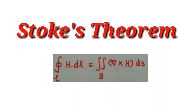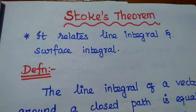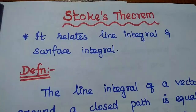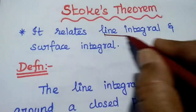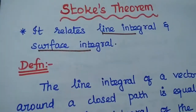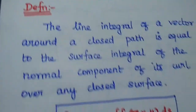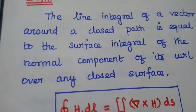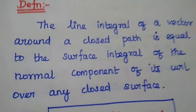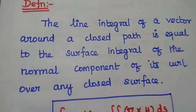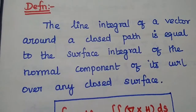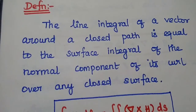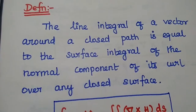Dear students, now we are going to discuss Stokes theorem and its proof and applications. Stokes theorem relates line integral and surface integral. The definition of Stokes theorem is: the line integral of a vector around a closed path is equal to the surface integral of the normal component of its curl over any closed surface.